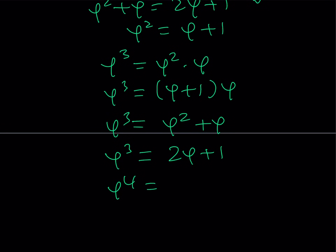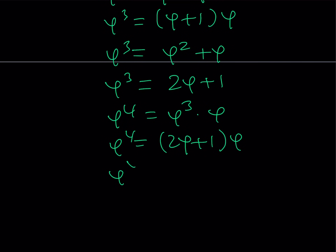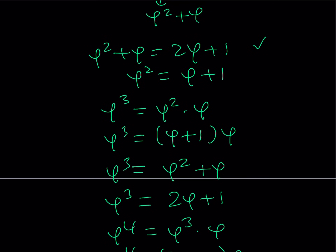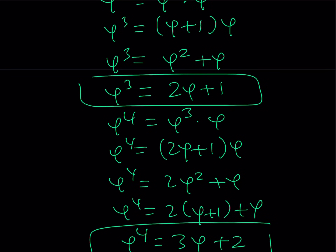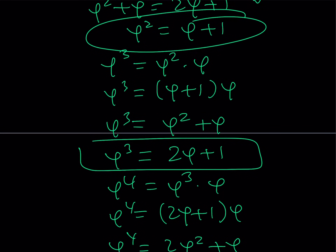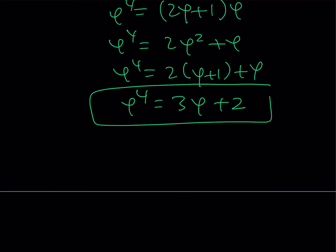Let's do one more: phi to the fourth power equals phi cubed times phi. Replacing phi cubed with 2 phi plus 1 and multiplying by phi gives 2 phi squared plus phi. Replacing phi squared with phi plus 1 gives 2(phi plus 1) plus phi, which is 3 phi plus 2. If you look at the coefficients when expanding powers of phi, you get 1, 1, 1, 2, 2, 3, 5, 8, and so on. Those are very special numbers — I'll let you figure out what they are, and please write it in the comments!